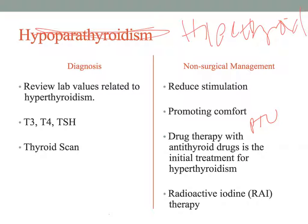Once the patient has achieved a euthyroid state — meaning a normalized thyroid — the frequency of follow-up visits is extended to every four to six weeks. If TSH, free T4, and T3 remain stable, follow-ups will be extended further. Common adverse reactions to antithyroid medications include rash, itching, and muscle pain occurring in one to five percent of patients. A rare but serious adverse effect is agranulocytosis or aplastic anemia, and it can affect the liver in some patients.